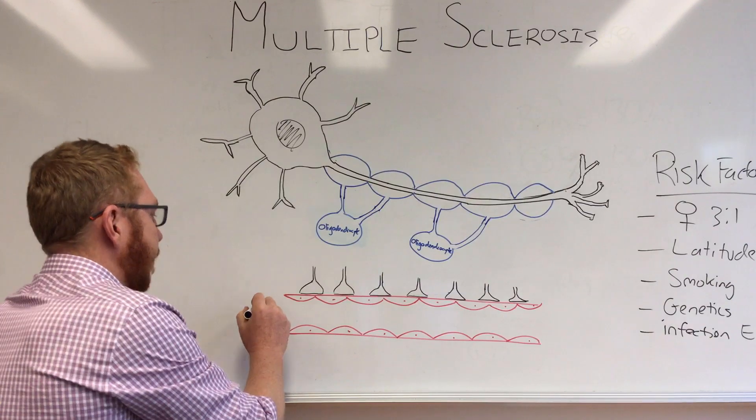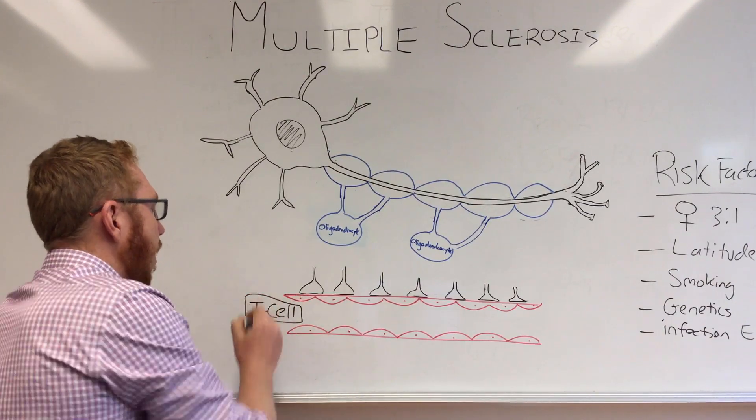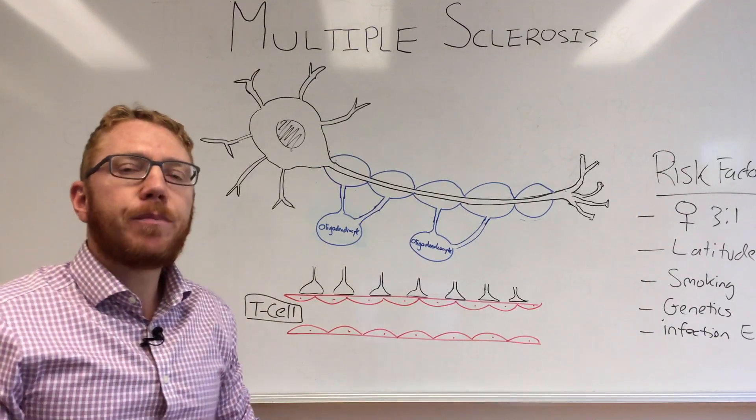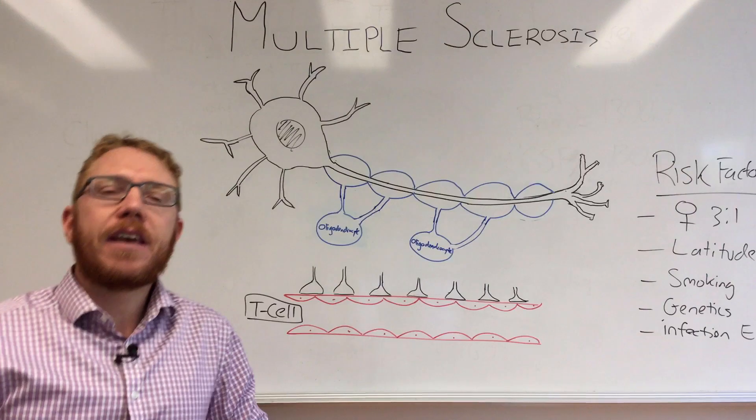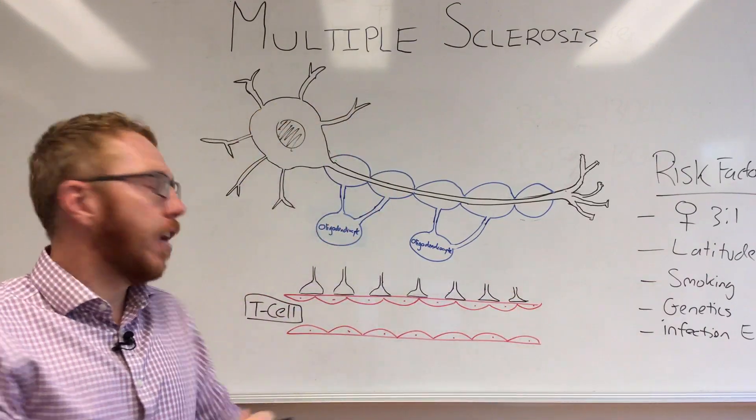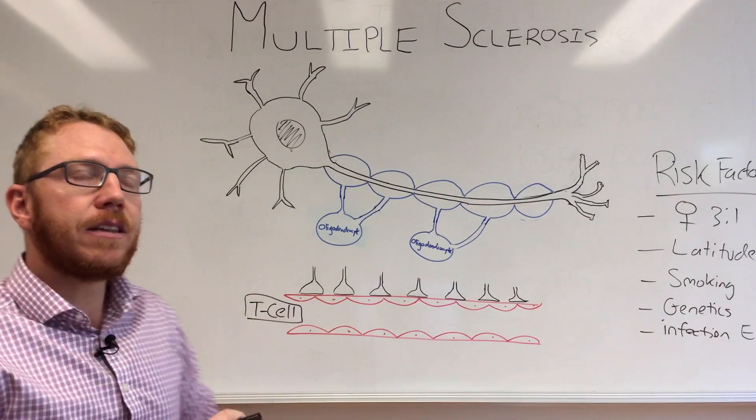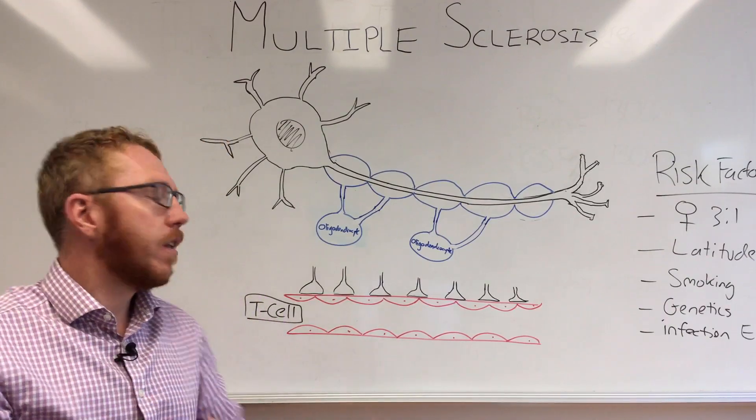What needs to happen is the first cell of importance is what we call a T lymphocyte or T cell. The first event seems to be that this gets primed and activated. Some of the things that can do this - the latitude effect seems to be associated with priming or activating the T cell and the cytokines that may be associated with it may lead to its activation.